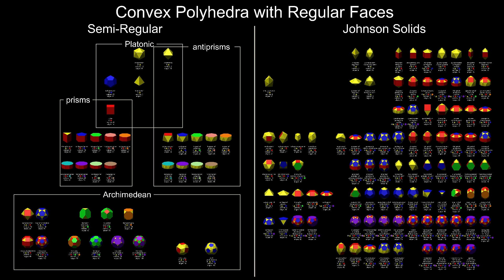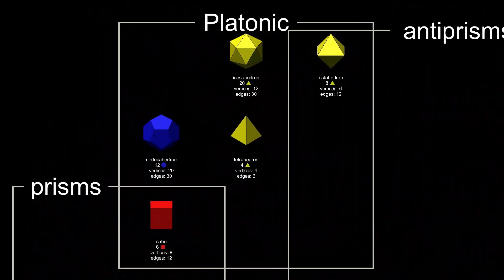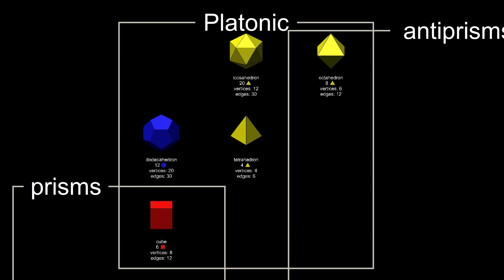Starting with the semi-regular polyhedra, the first subcategory is the five platonic solids, which most of you will be familiar with. All faces the same, all vertices the same.